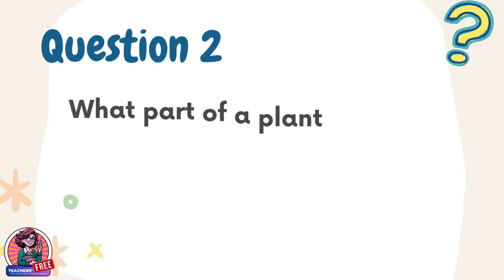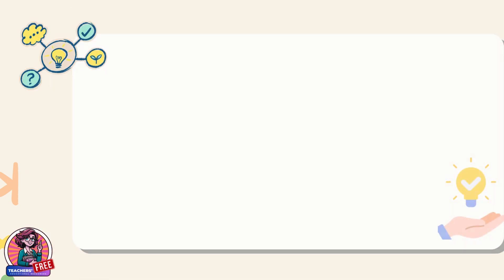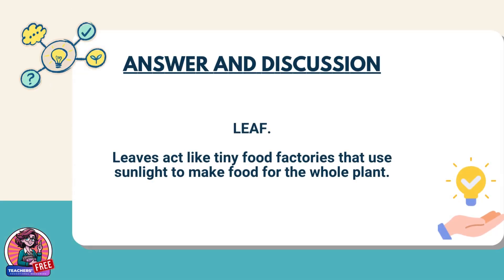Question 2. What part of a plant contains chlorophyll and captures sunlight to make food? Answer: Leaf. Leaves act like tiny food factories that use sunlight to make food for the whole plant.